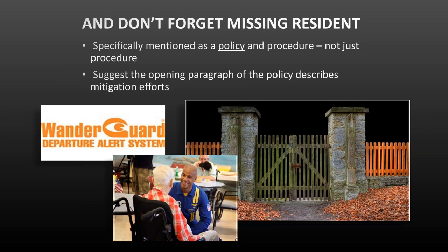Another one specifically called out for skilled nursing facilities is addressing missing residents. Having a procedure or operating guidelines for this is not sufficient anymore. You need to have one of those formal policy documents because you can have missing residents in different kinds of emergencies — if you're evacuating, if there's a wildfire, or just on a regular day if someone goes missing. This applies to both skilled nursing and intermediate care facilities. Those two types are the only ones that have to do this.